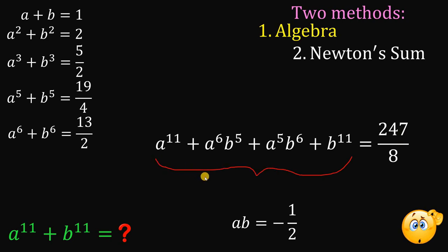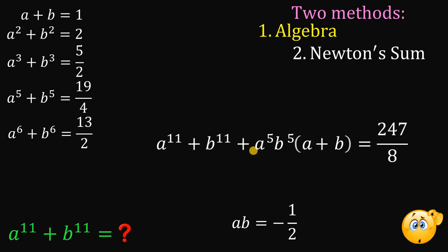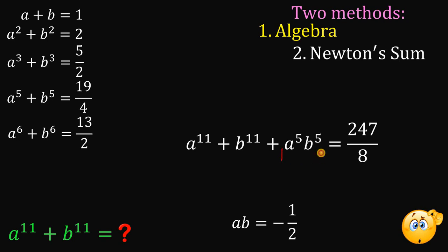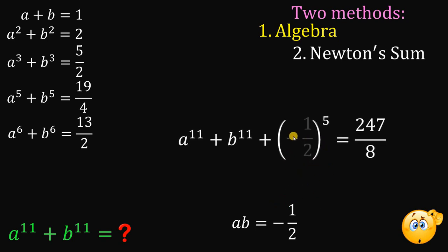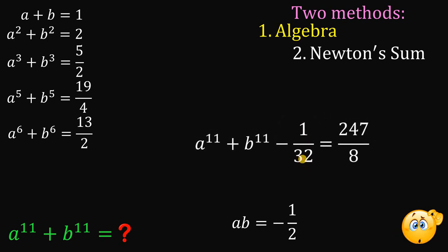On the left side, rearranging and factoring out a to the 5th times b to the 5th from the middle terms gives a to the 5th times b to the 5th times a plus b. Since a plus b equals 1, that simplifies. And a to the 5th times b to the 5th can be rewritten as ab raised to the 5th power. We know ab is negative 1 half, so negative 1 half raised to the 5th power equals negative 1 over 32.